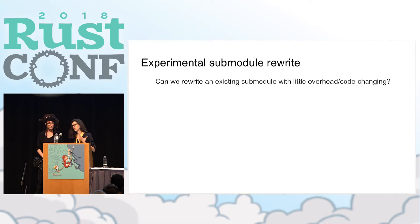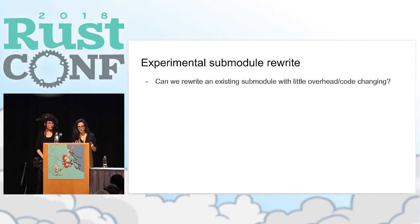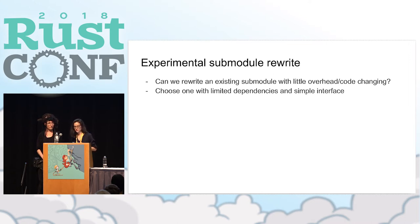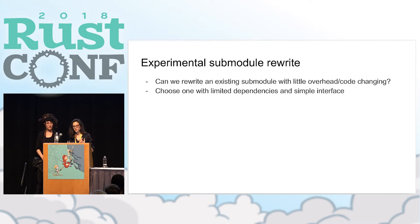One of the first things we started with was an experimental submodule rewrite. The question we wanted to answer was: can we rewrite an existing submodule with little overhead or code changing? So basically, can we take something that's already there and port it to Rust? We chose one submodule with limited dependencies and a simple interface, so it would have minimal impact and a simpler dependency graph.